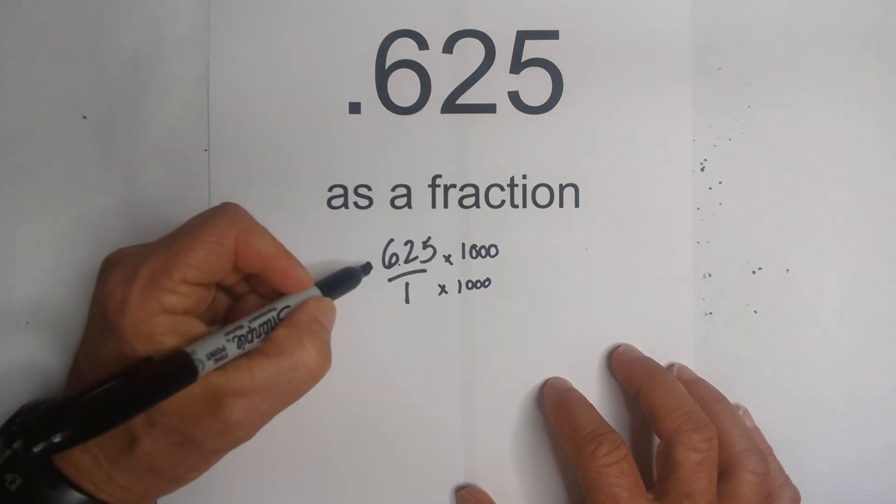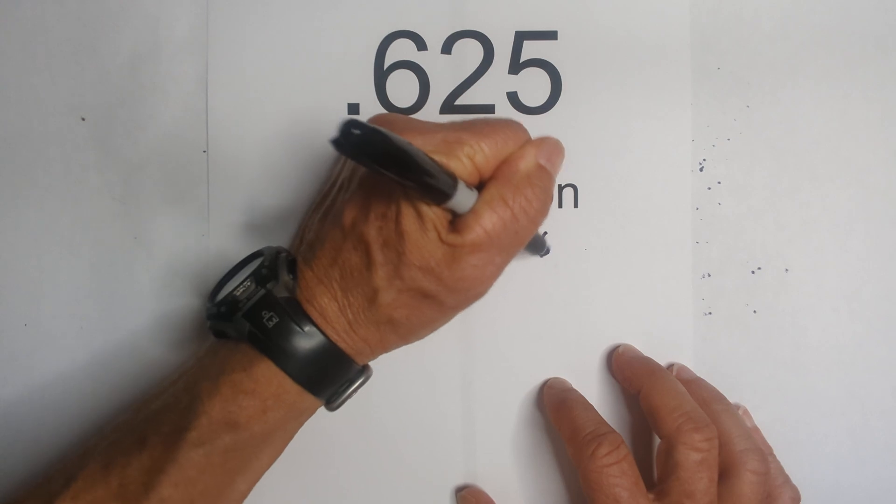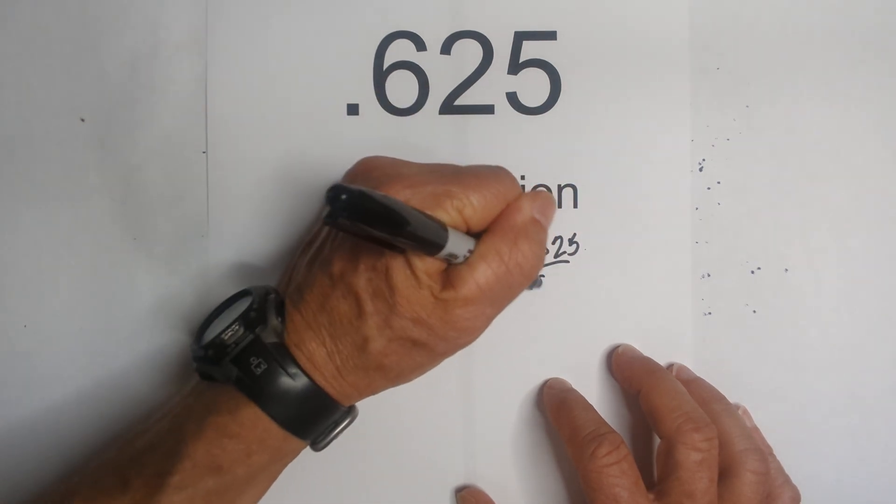Okay, when I multiply this, I move it one, two, three places. So that equals 625, and one times a thousand is a thousand.